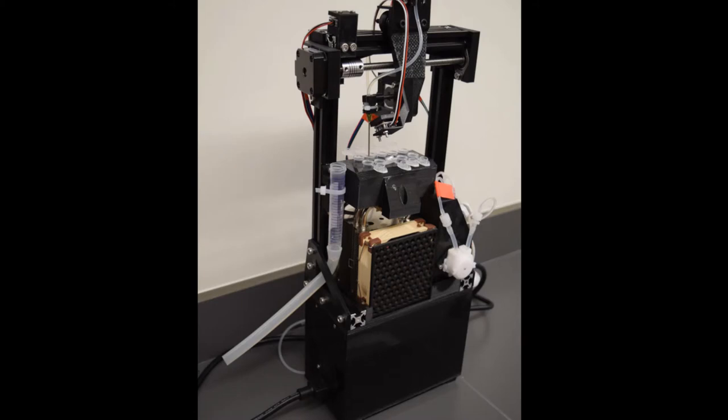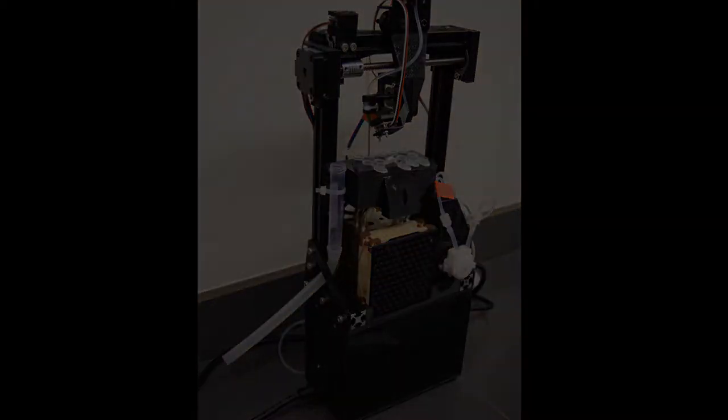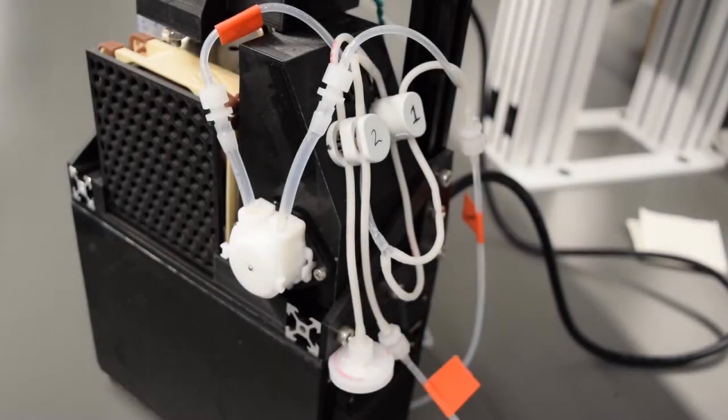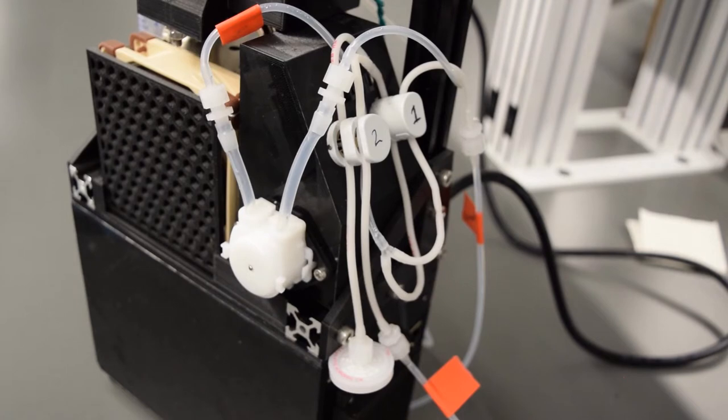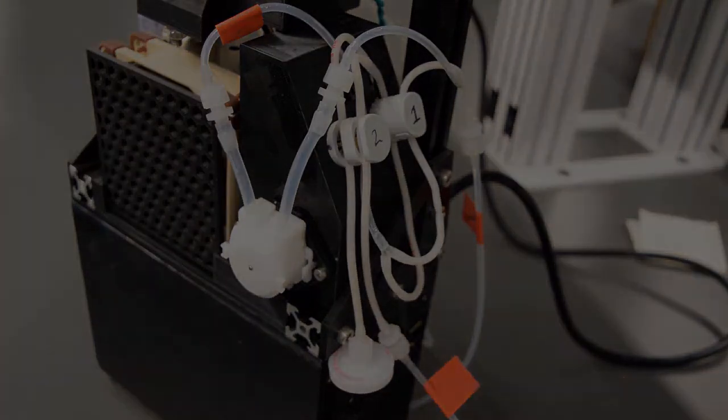The Biosampler will take up to 10 microcentrifuge tube samples from a bioreactor at a user-defined sample interval and chill them to a desired temperature set point. A peristaltic pump pulls fluid using two pinch valves to direct flow from either a bioreactor source, cleaning solution, or sterile filtered air to move the fluids through tubing up to a blunt sample dispensing needle.